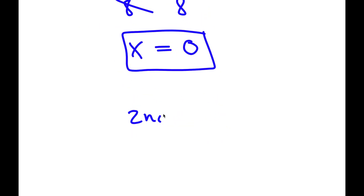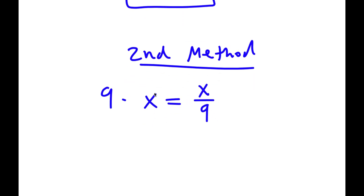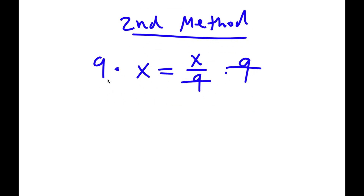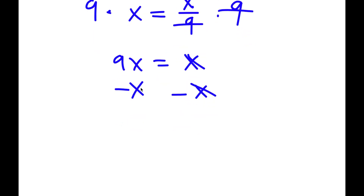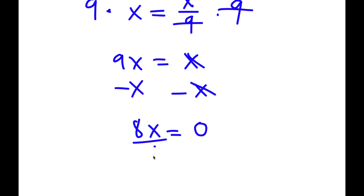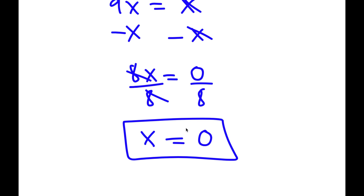Now I also have a second method to solving this problem, and this is actually an easier method. My initial problem was x is equal to x over 9. This time, instead of subtracting x over 9 on both sides, I can simply start by multiplying 9 on both sides. These two automatically cancel out, and 9 times x is 9x, so I have 9x is equal to x. Now I subtract x on both sides: 9x minus x is 8x, is equal to 0. Dividing both sides by 8, I have x is equal to 0.